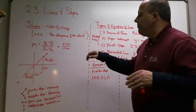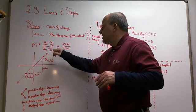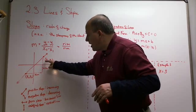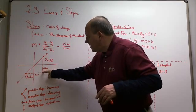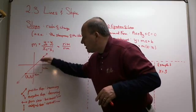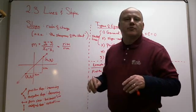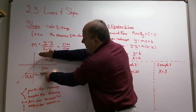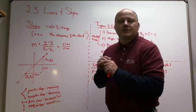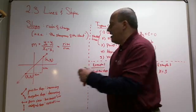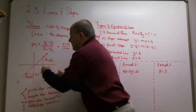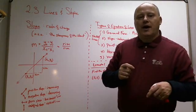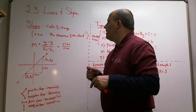The slope formula is the difference of the y's over the difference of the x's. This is called rise over run — the rise is the difference between the two y-coordinates, and the run is the difference between the two x-coordinates. So the formula is y2 minus y1 over x2 minus x1.